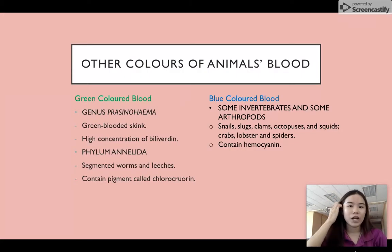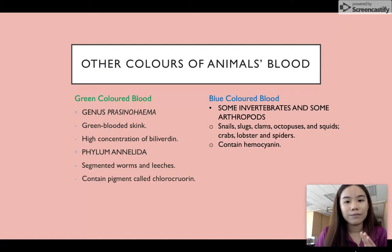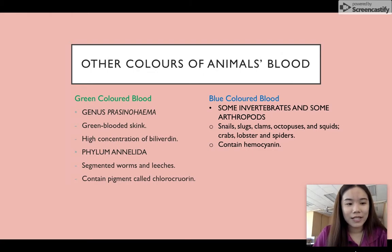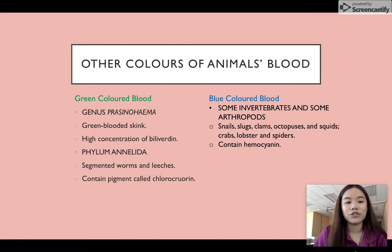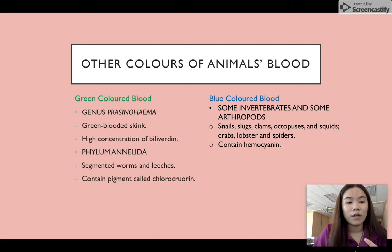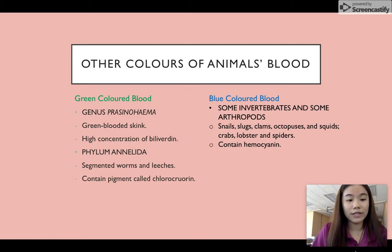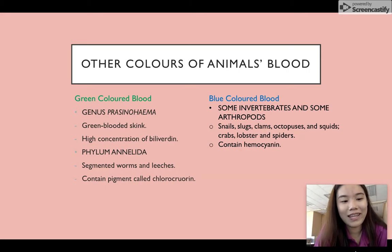In animals, there are several types of blood color. The first is green-colored blood, found in animals such as prasinohaema skinks. Green-blooded skinks do have hemoglobin in their blood, but the blood also contains a very high concentration of biliverdin. Biliverdin is a green pigment produced from the breakdown of hemoglobin. Its main location in most animals is in bile, a secretion produced by the liver. Some members of the phylum Annelida, such as segmented worms and leeches, also have green-colored blood because it contains a green respiratory pigment called chlorocruorin.